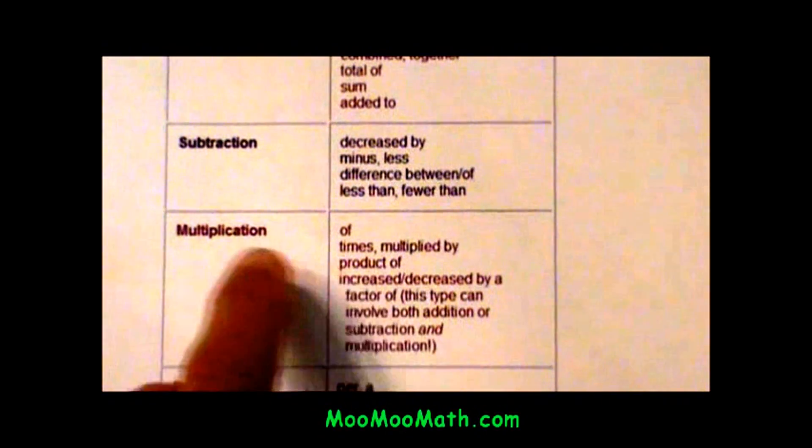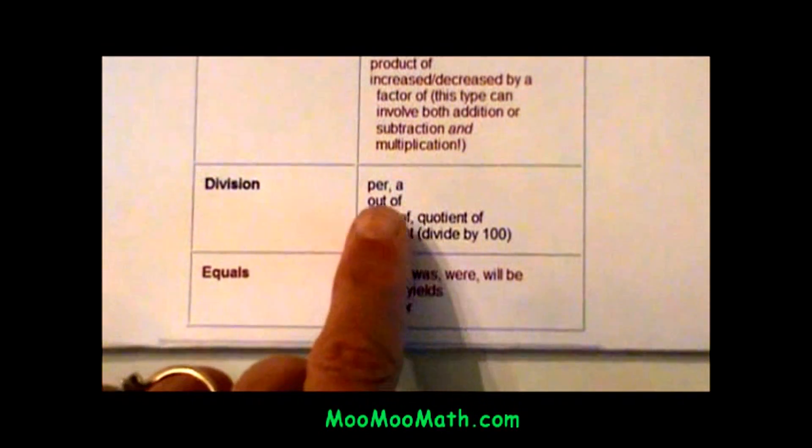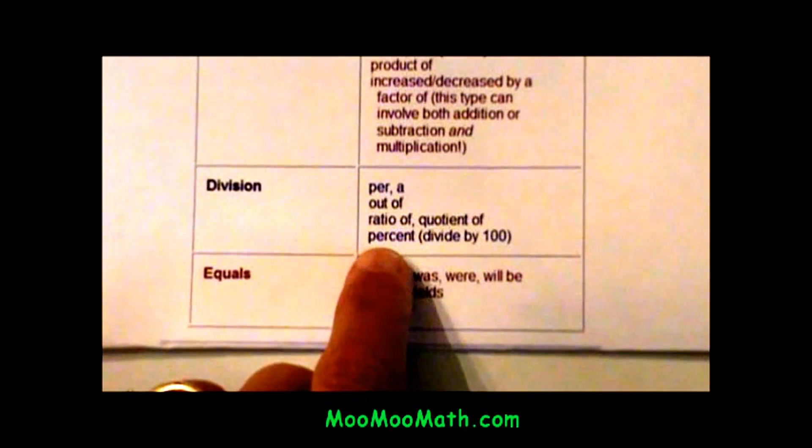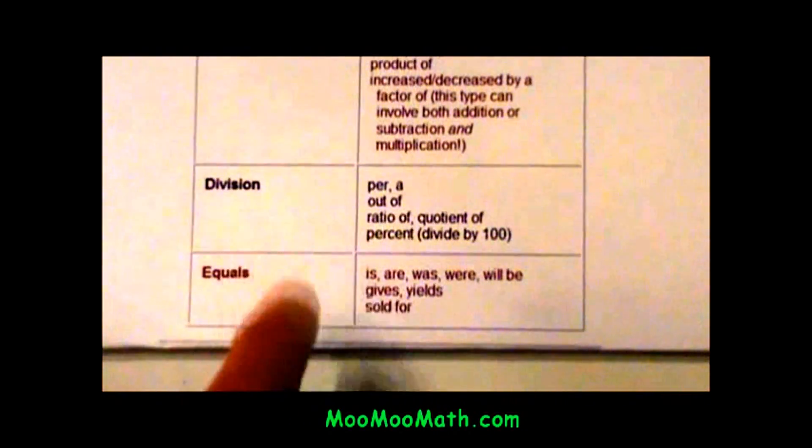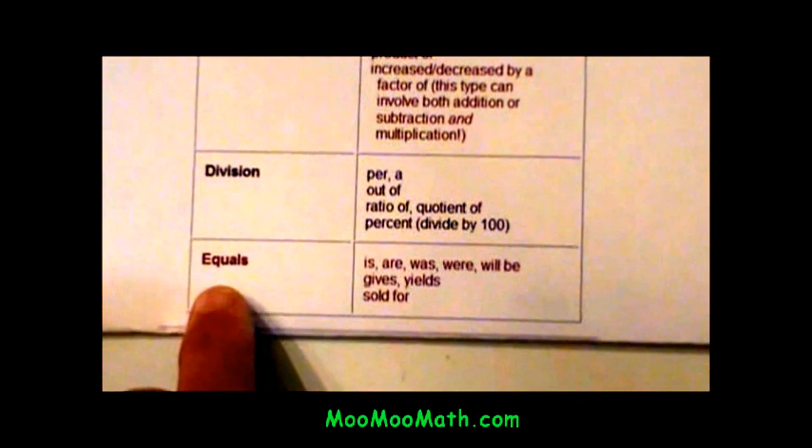And if you see these keywords per, out of, ratio, quotient, percent—percent always divided by a hundred by the way—you will use division. And then some keywords for an equal sign when you were actually writing an algebraic equation would be is or was, were, gives, yields, and sold for.